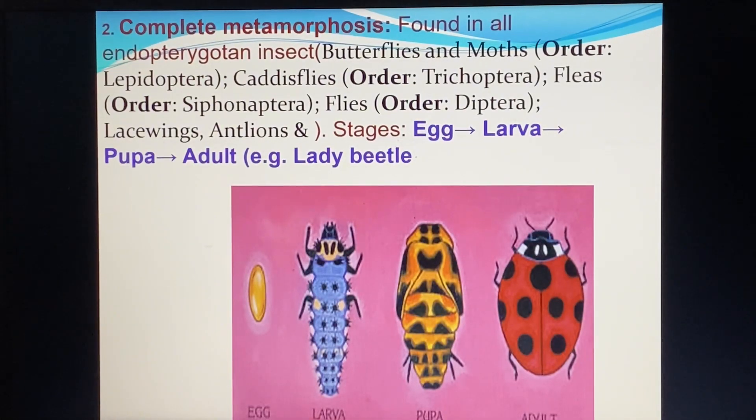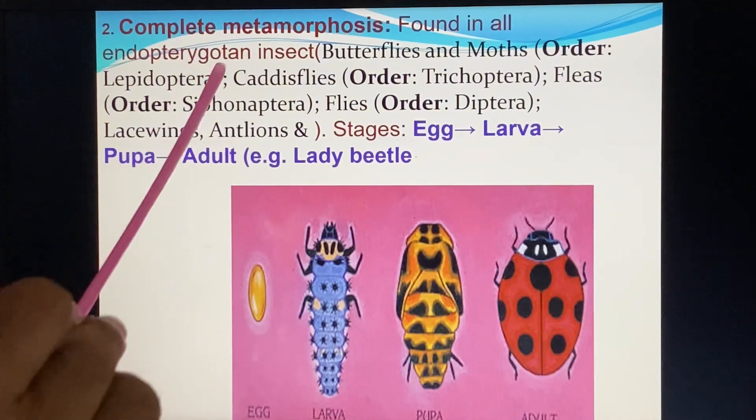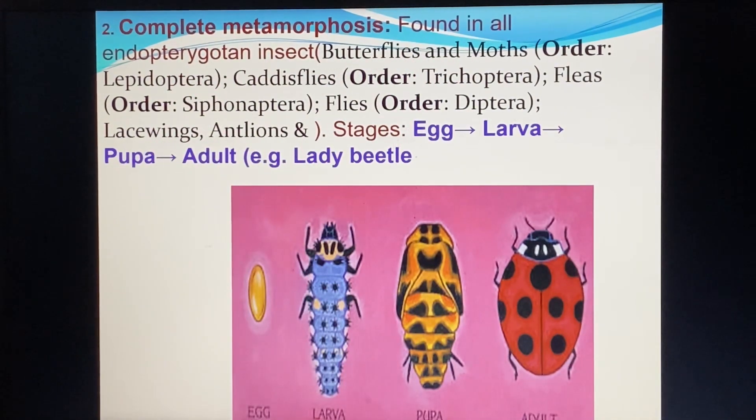The third type is complete metamorphosis, found in all endopterygote insects.